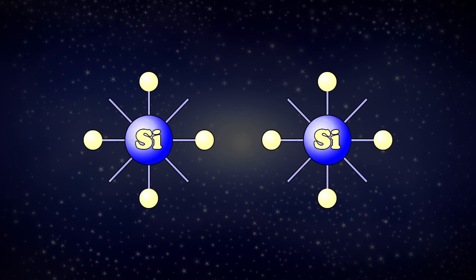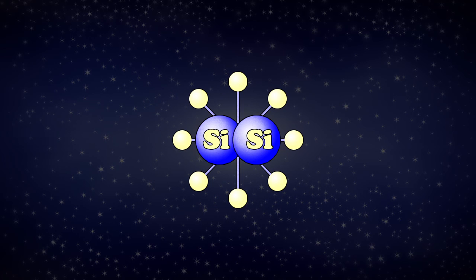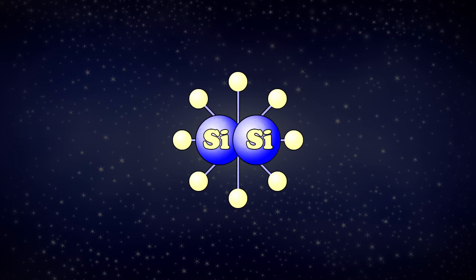By itself, silicon atoms join together very easily because the outer electron shell only has four electrons, but it wants to have eight, so they share.